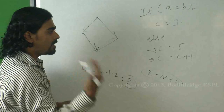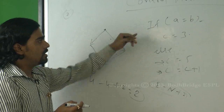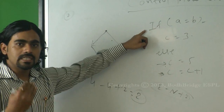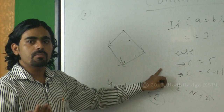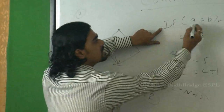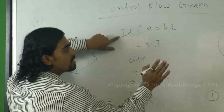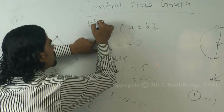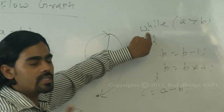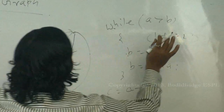The second method states: count how many decision statements are given in the program, then add 1. In the first example, only one decision is there — the if condition. Else is not a decision. So one decision plus 1 equals 2. In the second example also, how many decisions? Only one decision. So 1 plus 1 is equal to 2. Here also we have 2.